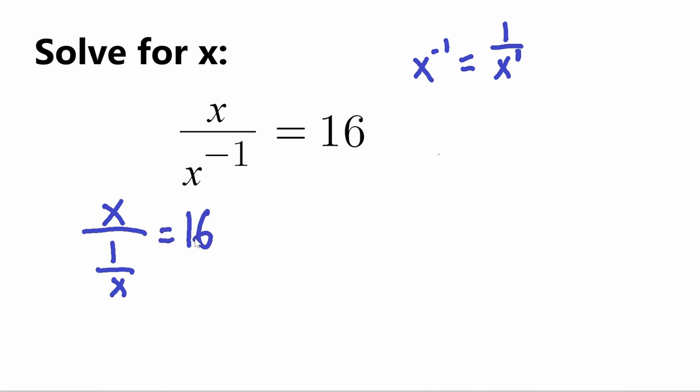So now this may look a little funky, right? We have a fraction under a fraction. However, this is equal to - you have a number and you divide it by a fraction, right? So that's X divided by 1 over X equals 16.